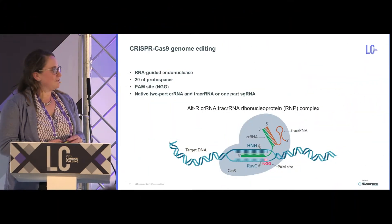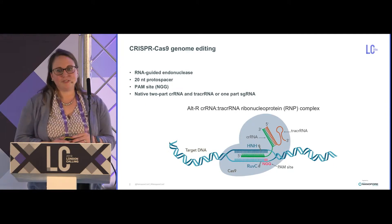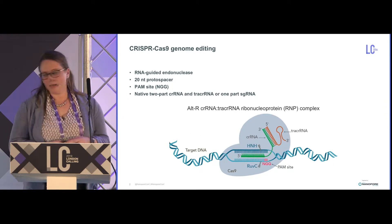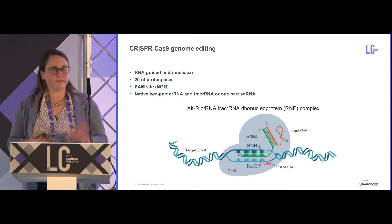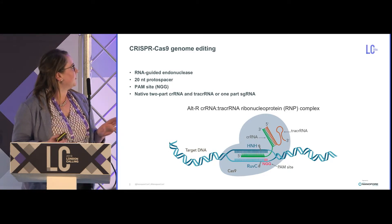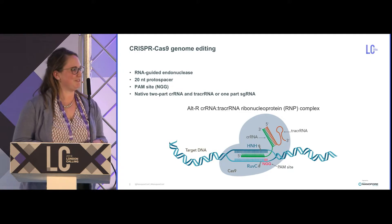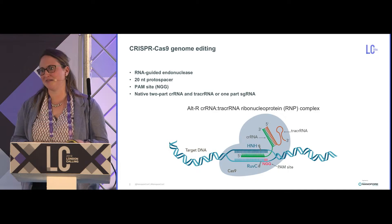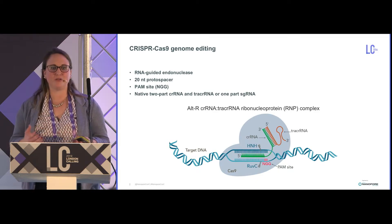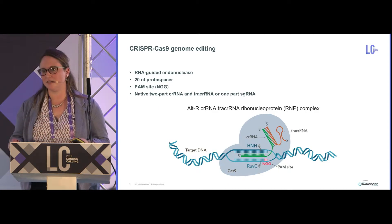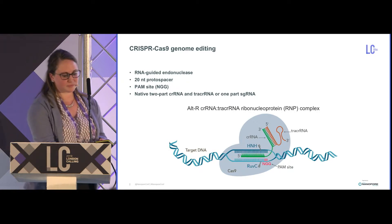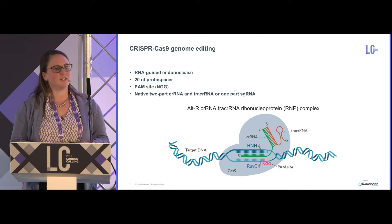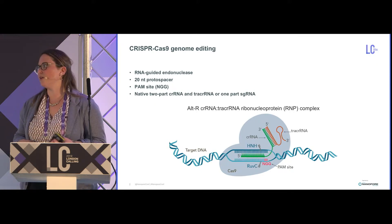Thanks to the previous speakers for introducing CRISPR-Cas9-mediated double-stranded breaks. CRISPR-Cas9 is an RNA-guided endonuclease that requires RNA molecules which confer specificity — 20 bases of specificity to your target region — and that tells the Cas9 where to create a double-stranded break.